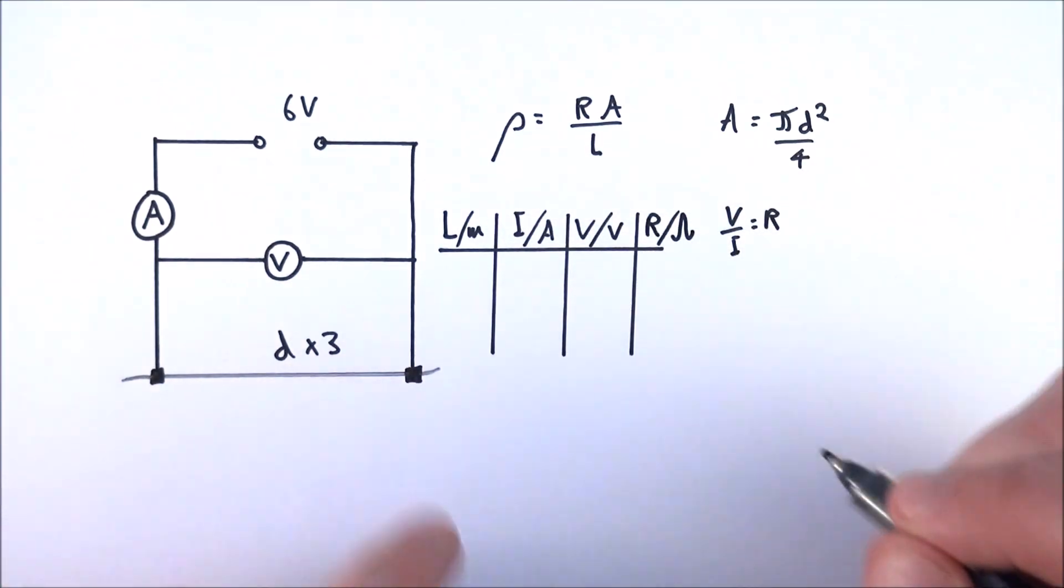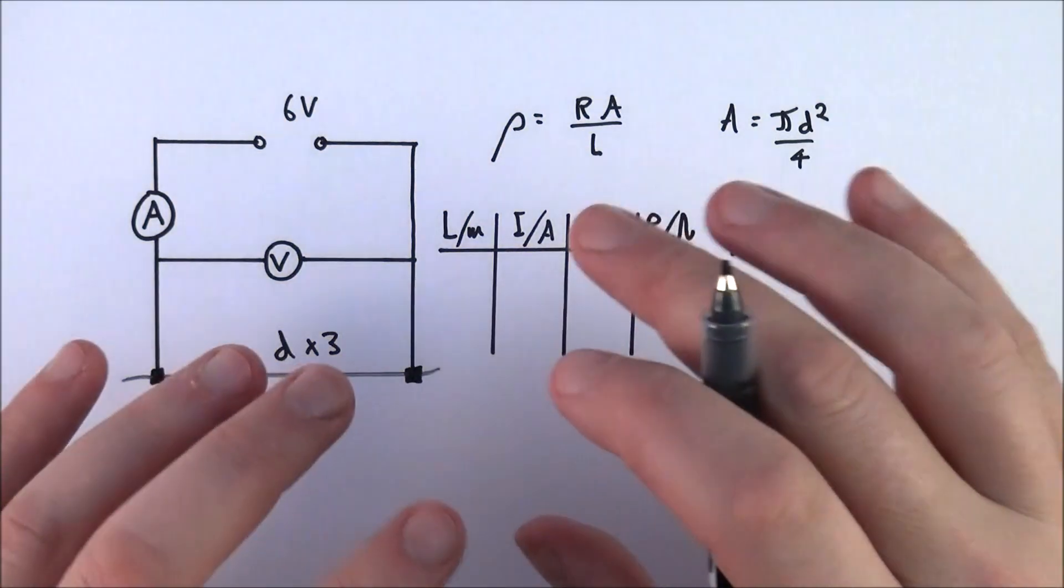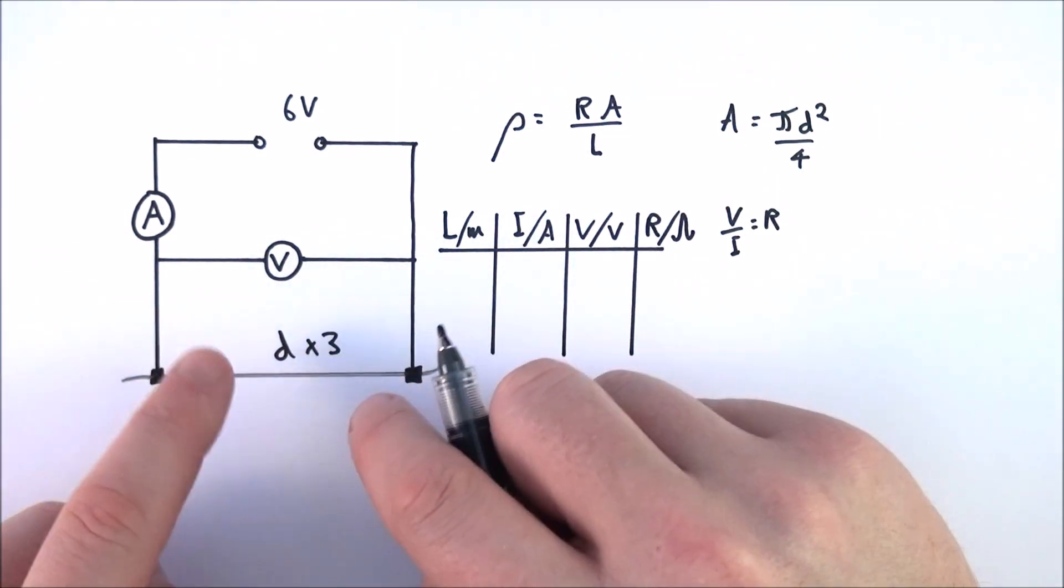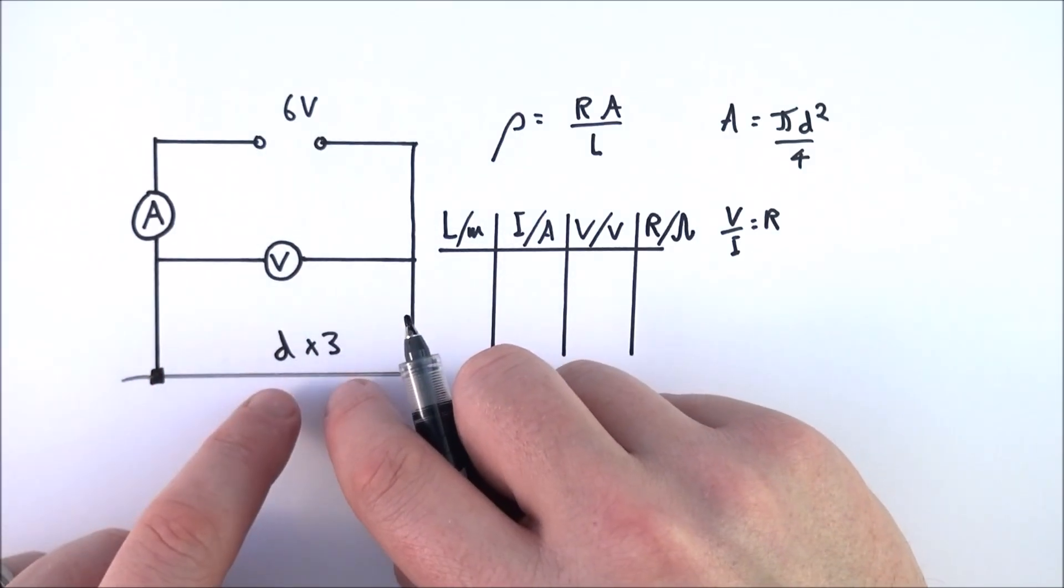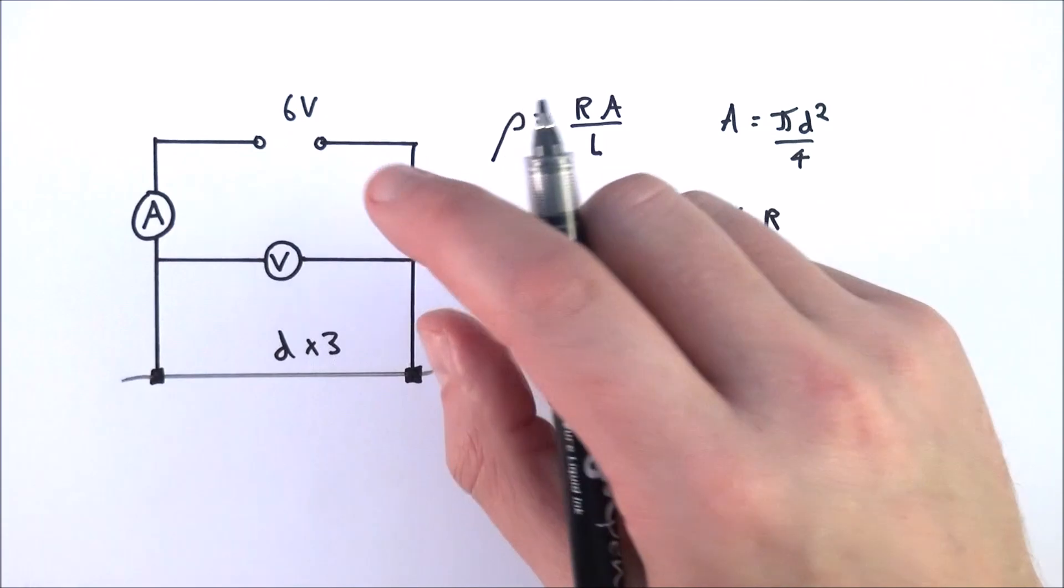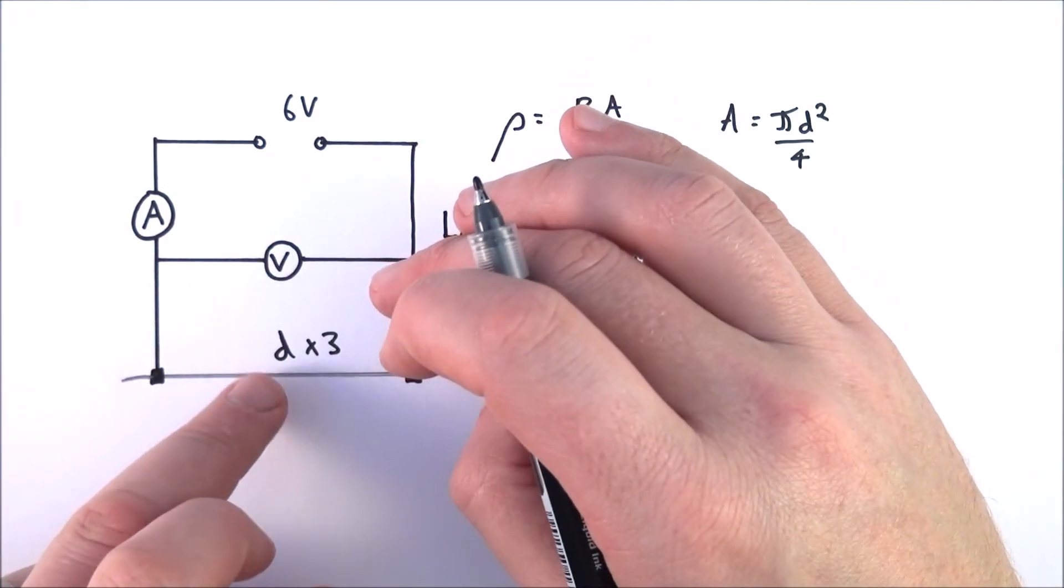Resistivity does depend upon the temperature of that material. Therefore, what you need to do is close the switch for a very short amount of time, take your readings, and then open the switch again.